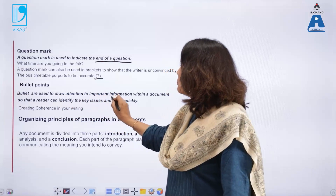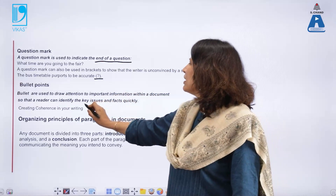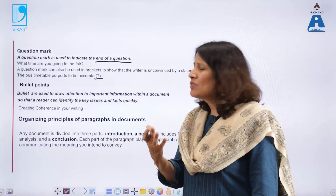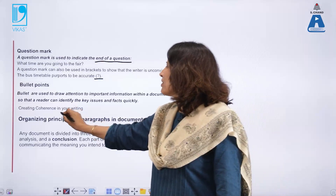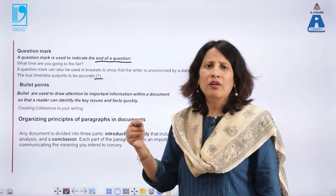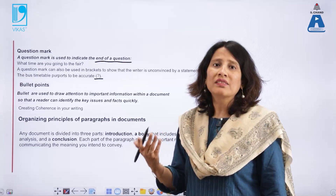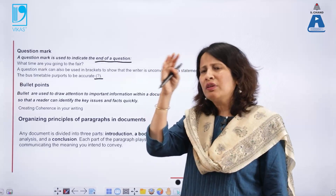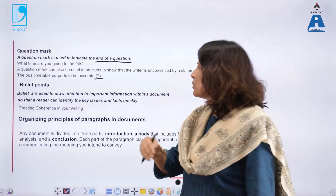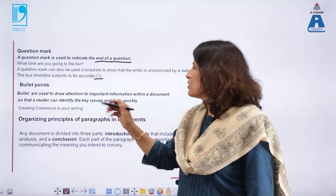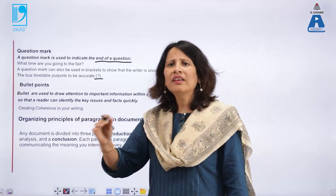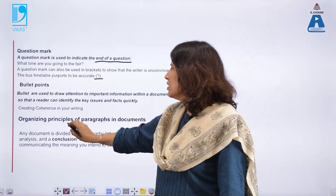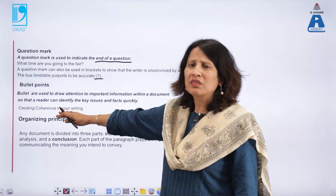Bullet points are used to draw attention to important information within a document so that a reader can identify key issues and facts quickly. They create coherence in writing and demonstrate good writing skills. For example, when making an explanation after a sentence and listing points as bullet one, two, three, four — that shows writing is coherent, clear, precise, and easily understandable by readers.